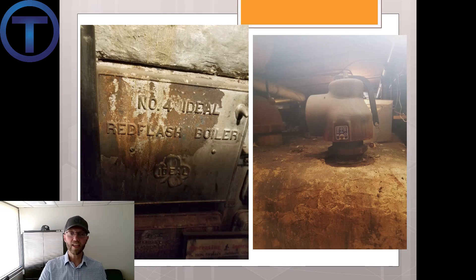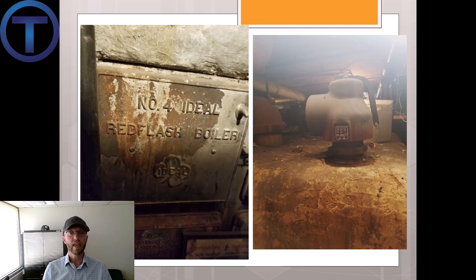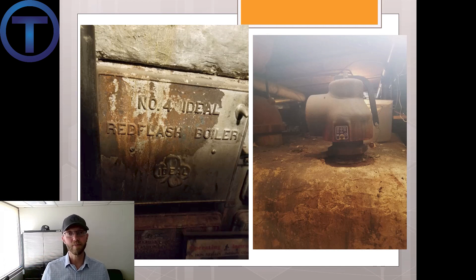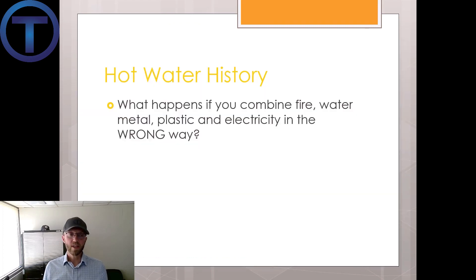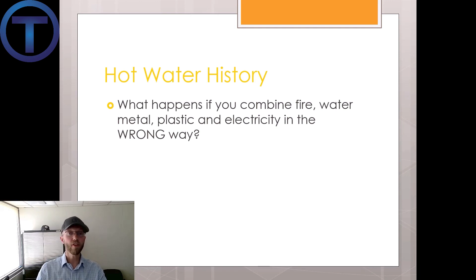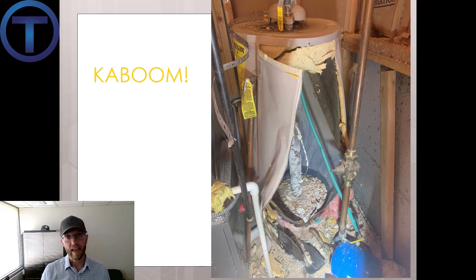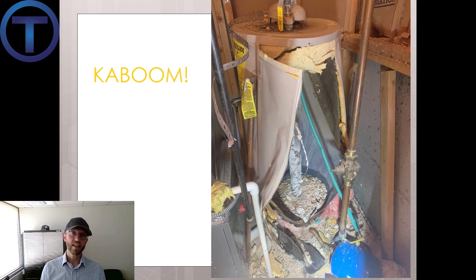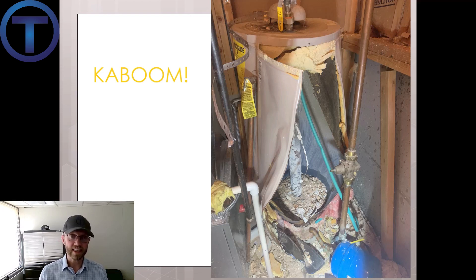On the right side here you can see an ancient temperature pressure relief valve. Early on it became evident that as we heat water in a contained metal vessel the pressure goes up and it becomes quite dangerous, so they had to have safeties on this. Safety is another part of what we will look at today — you have to have some very specific safeties in place. Consider what happens if you combine fire, water, metal, plastic, and electricity in the wrong way. The results can be disastrous.